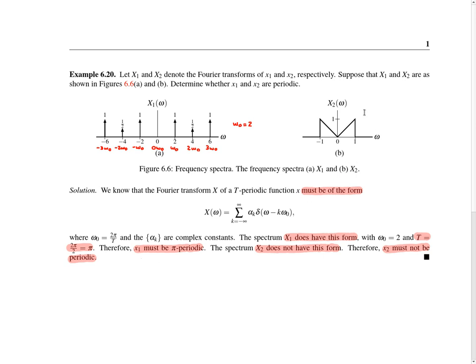On the other hand, looking at the graph in figure b, the graph of big X2 clearly does not correspond to a series of impulses — it does not have the impulse-train form given by the equation. Therefore, big X2 cannot correspond to a periodic function, and we conclude that little x2 must not be periodic.